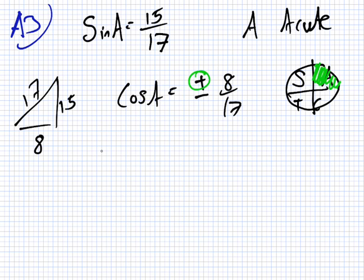So, then that means tan A will be sine over cosine, or in other words, 15 over 8.